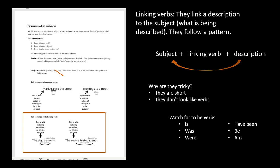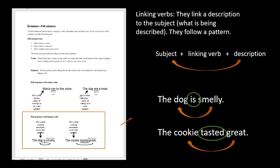Watch for 'to be' verbs because those tend to be small and unusual. When you conjugate 'to be,' you get words like is, was, were, have been, be, am — anytime you see those, you probably have a linking verb. In the example 'the dog is smelly,' there are two hints: first, 'is' is one of the 'to be' verbs; second, 'smelly' is a description, and we notice it right away.